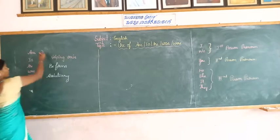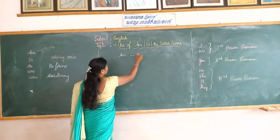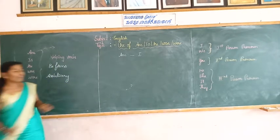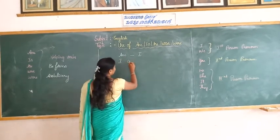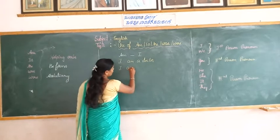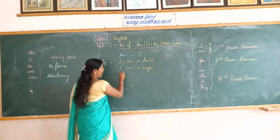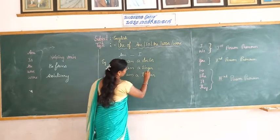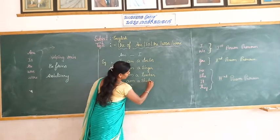First and foremost, we are discussing about 'am'. Am is always used with 'I'. For example: I am a doctor. I am a singer. I am a teacher. I am a student.